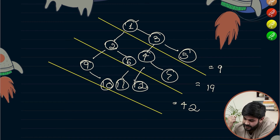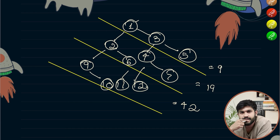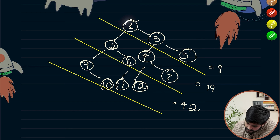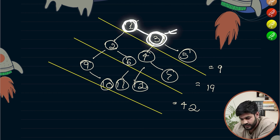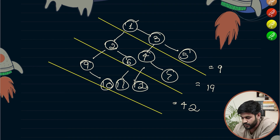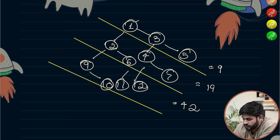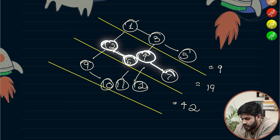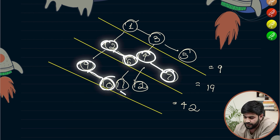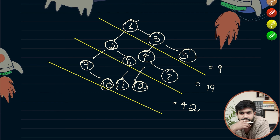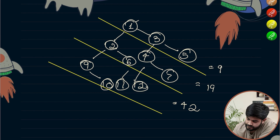If we observe this binary tree, we can see an interesting pattern. The root and its right child belong to the same diagonal. We can confirm this across all diagonals — parent and right child always belong to the same diagonal.